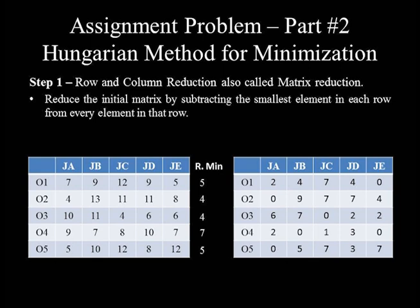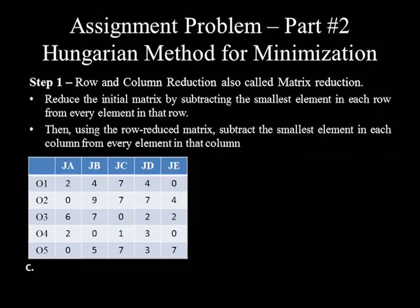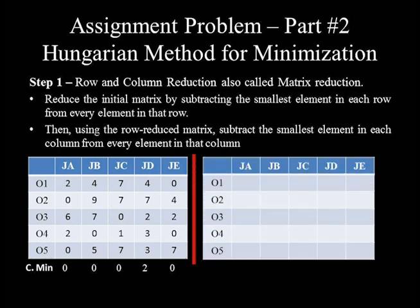The matrix determined in this row reduction step is called the row-reduced matrix. Using this row-reduced matrix, we subtract the smallest element in each column from every element in that column. The minimum value in columns 1, 2, 3, and 5 is 0, and that of column 4 is 2. Let's copy a blank table to fill the column-reduced entries. Columns 1, 2, 3, and 5 values are copied as they are, since subtracting 0 leaves the element unchanged.